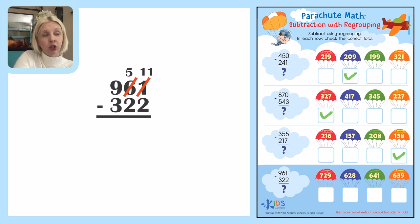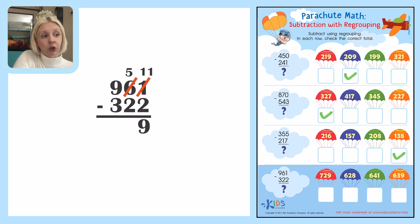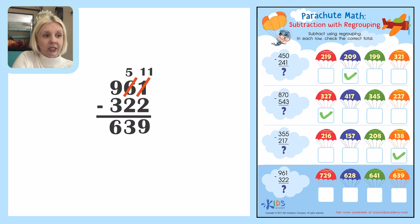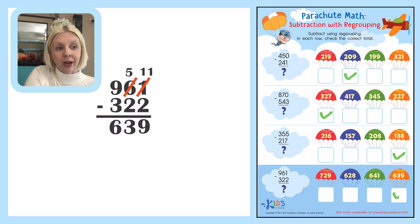So eleven minus two — counting back: eleven, ten, nine — gives me nine in the ones place. Then five minus two is three in the tens place. And in the hundreds place I've got nine minus three — counting back: nine, eight, seven, six — gives me six. So I've got 639. I'm going to find that answer — six hundred and thirty-nine — there it is, the last one.